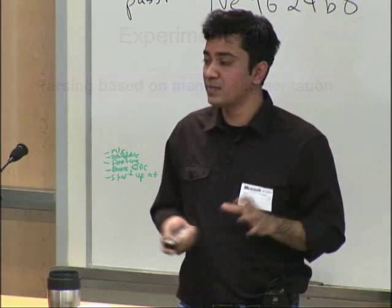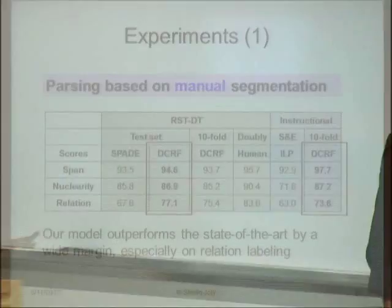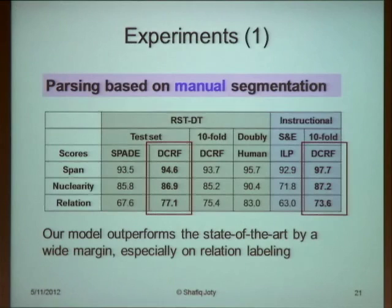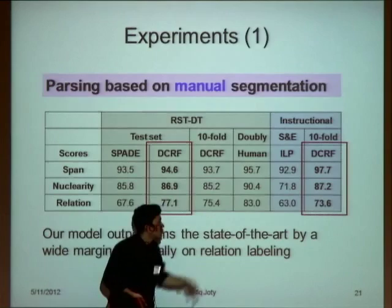Here are the results when the parser is given manual segmentation. To compare with previous approaches, we show results on their specific test set, but we also show tenfold cross-validation results for generality. On the RST-DT test set, our DCRF model consistently outperforms SPADE, especially on relation labeling where it outperforms by a wide margin. Results are consistent in tenfold cross-validation. On the instructional corpus, improvement is even higher across all metrics. For discourse segmentation, our logistic regression-based segmenter outperforms HILDA and SPADE by a wide margin and is comparable to Fisher and Roark on the same test set, using fewer features — making it more efficient.